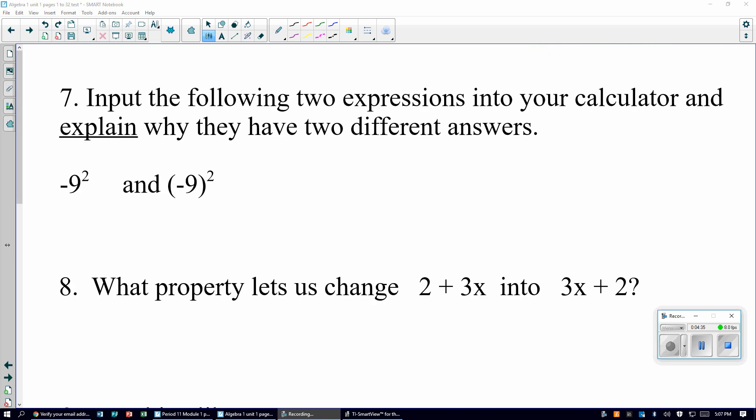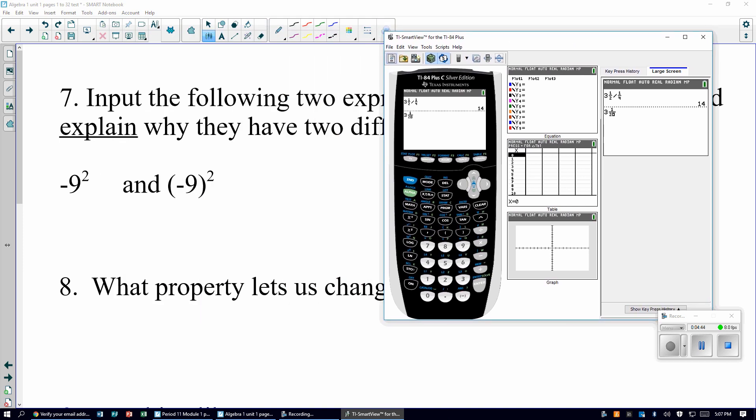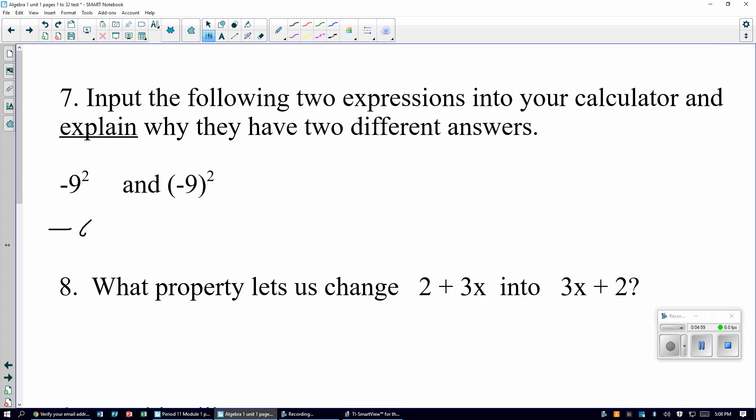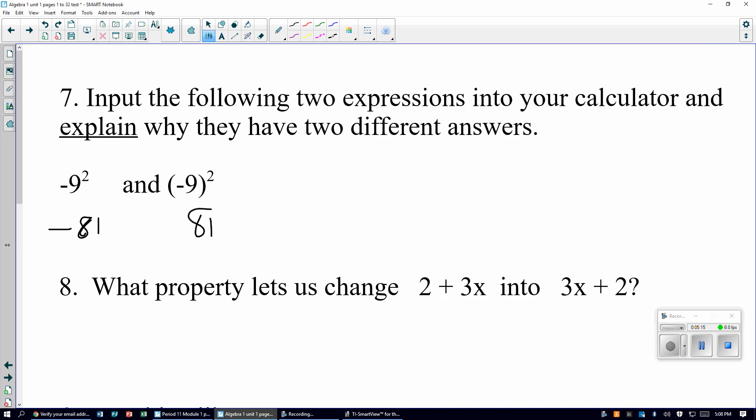Next problem. Input the following two expressions into your calculator. Negative 9 squared. You see, the keys turn red. Hit equals. And we have negative 81. Write it down. Negative 81. Then, the other one. Don't clear the calculator. Parenthesis. Negative 9. Close parentheses. Then the square. Equals. Positive 81.